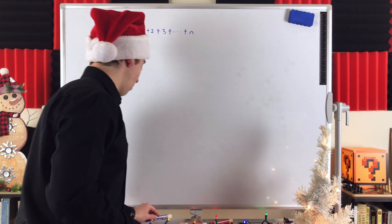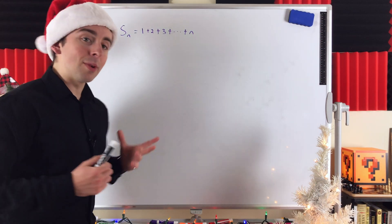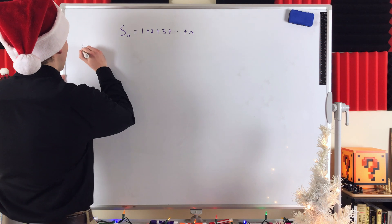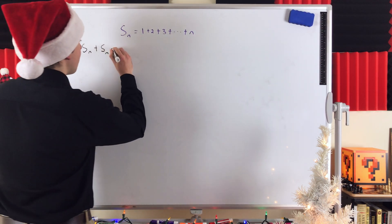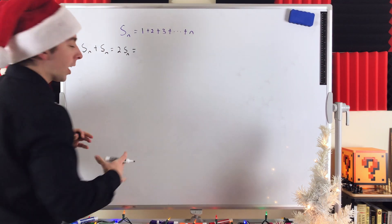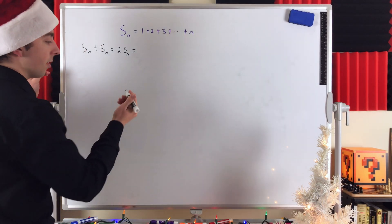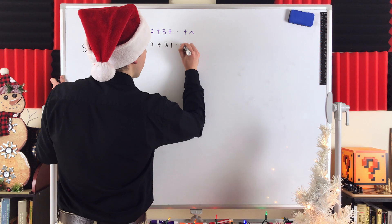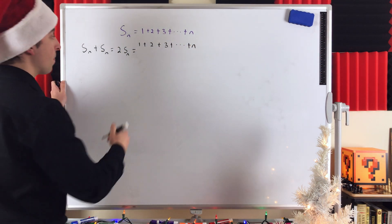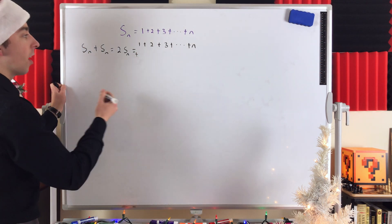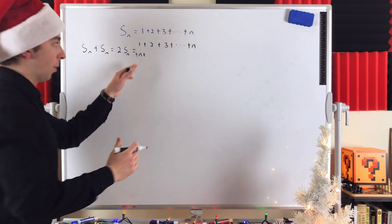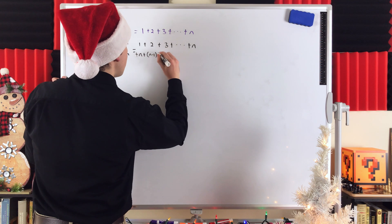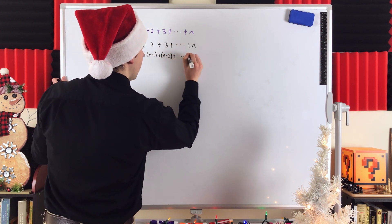We start off with our sum Sn. Like we did before, we're going to add another copy of Sn, so we're looking at Sn plus Sn, which is 2Sn. We write it just like we were doing before: the first sum Sn is 1 plus 2 plus 3 and so on all the way up to the nth counting number. Then we add our second copy of Sn, written in descending order: plus n plus n minus 1 plus n minus 2 and so on all the way down to 1.